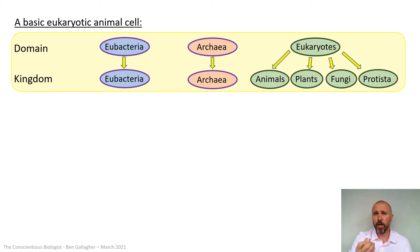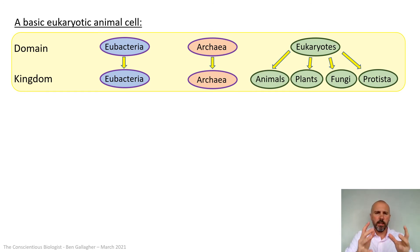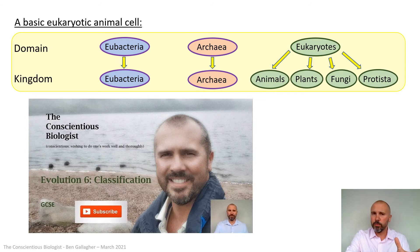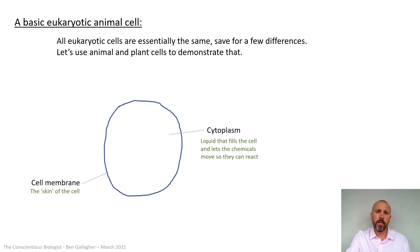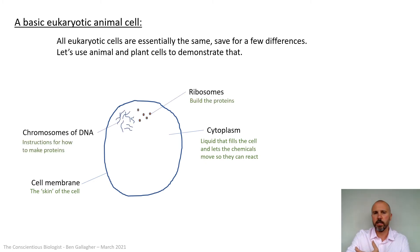Eukaryotes — hopefully you already know in detail what an animal cell and a plant cell look like. The other two eukaryotic groups are fungi and protista. If you want to refresh your knowledge of that, it's Evolution 6 on classifications from my GCSE course. If we look at a basic animal cell as a eukaryotic example, almost all eukaryotic cells are essentially the same with a few differences. So let's put on the bits we know: it's got a cytoplasm, it's got a cell membrane — that's what makes it a compartment — and it's got the chromosomes of DNA and the ribosomes.